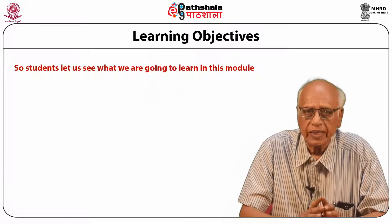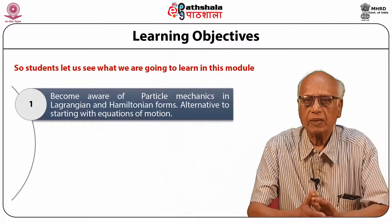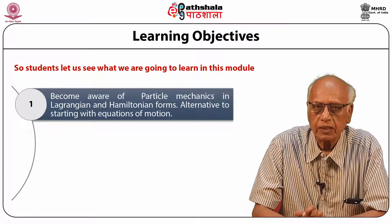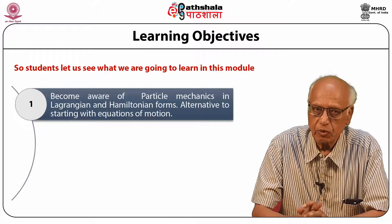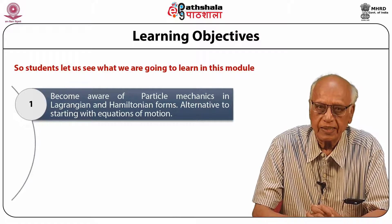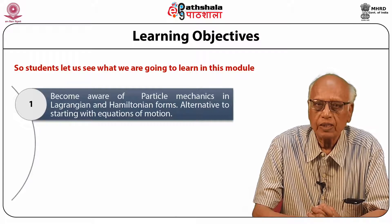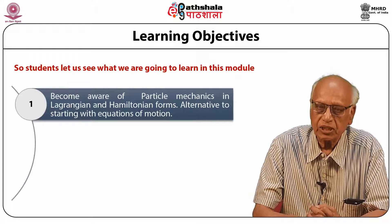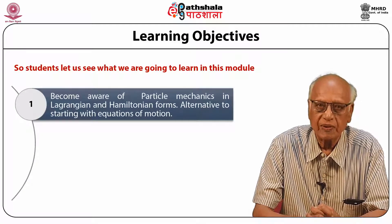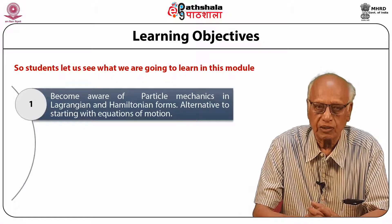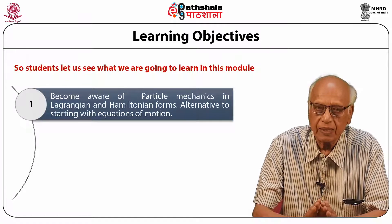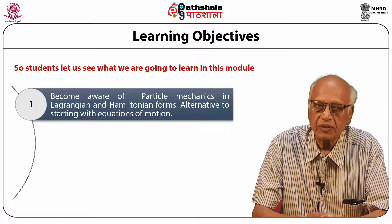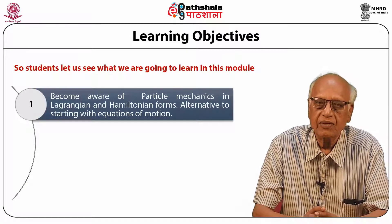From this module students will get to know about the following. They should become aware of particle mechanics in Lagrangian and Hamiltonian forms. These are alternatives to starting with Newton's equations because normally you begin mechanics with Newton's equations of motion, but there is a more generalized way called the Lagrangian or Hamiltonian Theory, also called the Variational Principle or the Stationary Action Method. Particles have a finite number of degrees of freedom, but when the number of particles becomes continuous, the degrees of freedom become infinite.